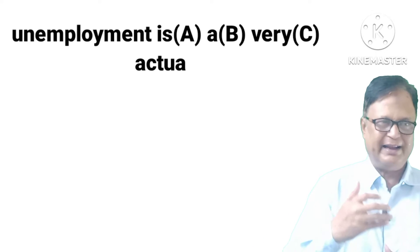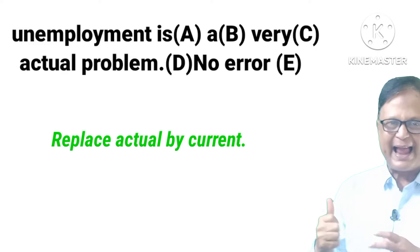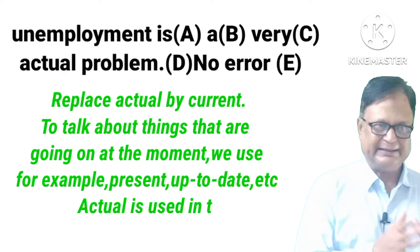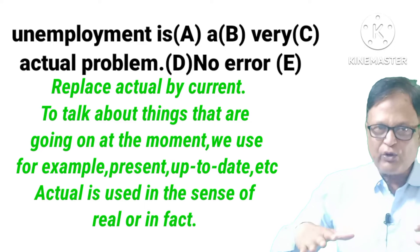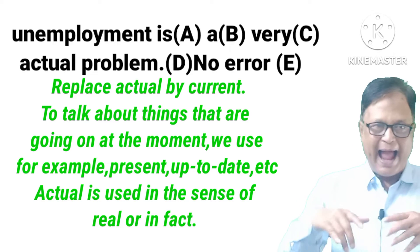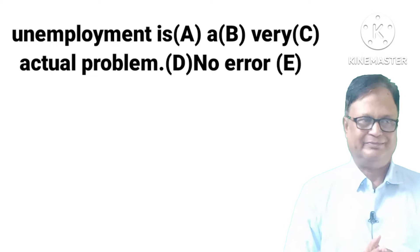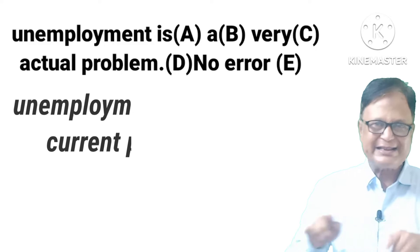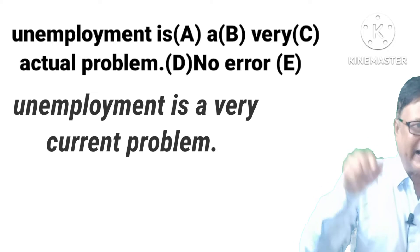Next: 'Unemployment is a very actual problem.' Replace 'actual' with 'current.' To talk about things going on at the moment, we use words like 'present' or 'up to date.' 'Actual' is used in the sense of 'real' or 'in fact.' The corrected sentence is: 'Unemployment is a very current problem.'